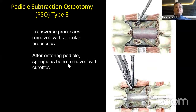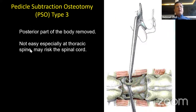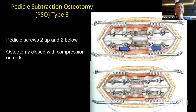After entering the pedicle, spongy bone is removed with curettes or using an ICP drill. There are also osteotomy devices to cut the posterior part of the cortex and push it into the cavity you created. It is not easy, especially at the thoracic spine where it may risk the spinal cord. Because of that, many surgeons doing pedicle subtraction osteotomy perform neuromonitoring for patients.